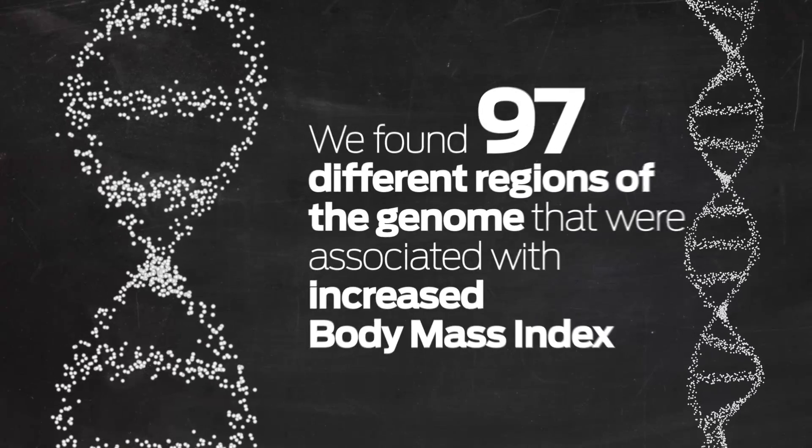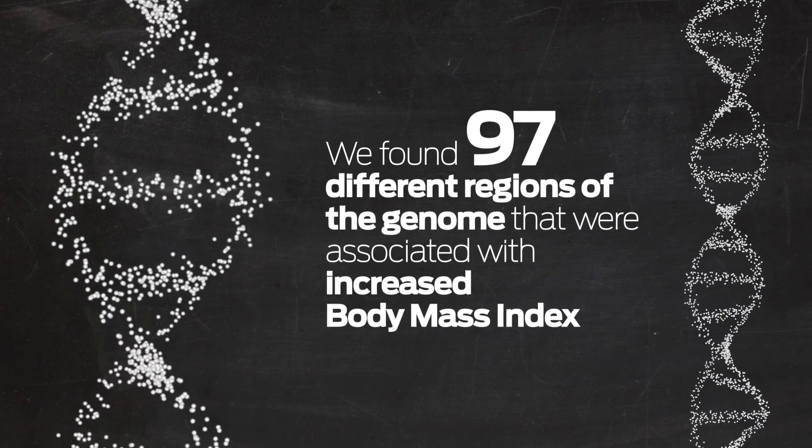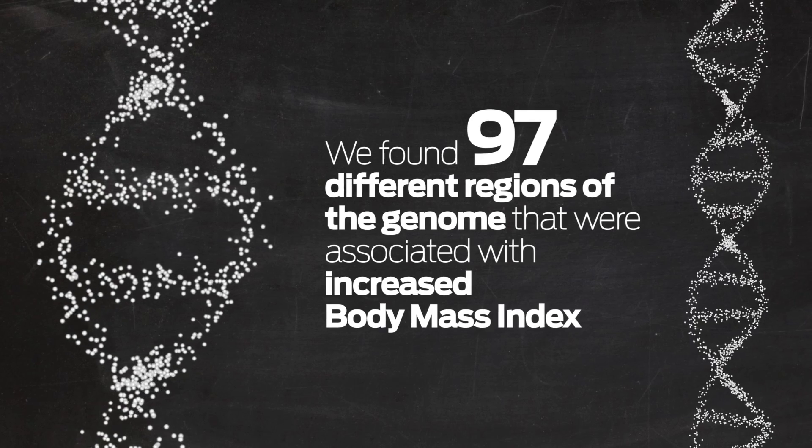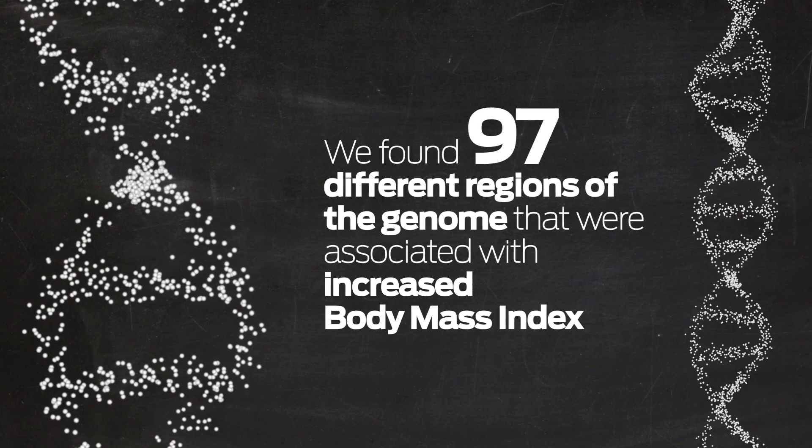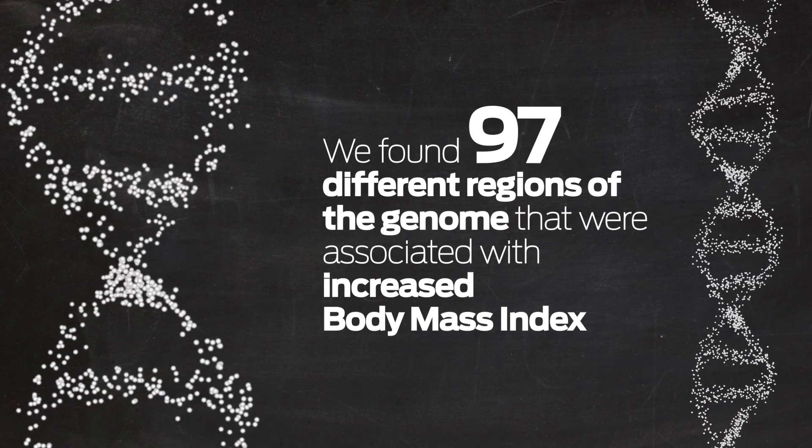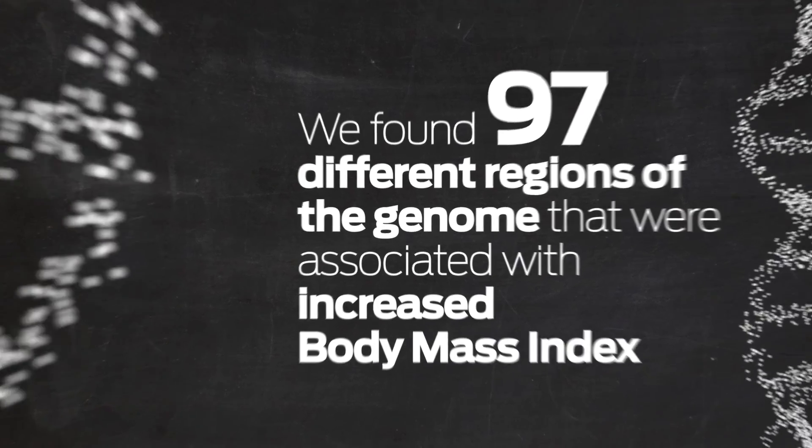These variants were near genes that told us a little bit about the biological predisposition to obesity. We found 97 different regions of the genome that were associated with increased body mass index. From these, we are able to look near these areas and examine some of the genes there to figure out what kinds of processes may be related to predisposing people to obesity.